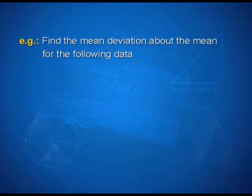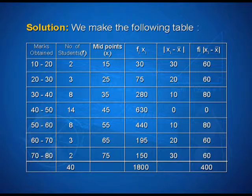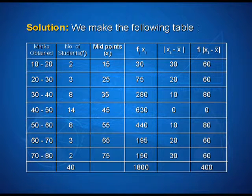Find out the mean deviation about the mean for the following data. Marks obtained and number of students are the two columns. Marks range from 10 to 20, 20 to 30, 30 to 40, 40 to 50, 50 to 60, 60 to 70, and 70 to 80. Number of students correspondingly are 2, 3, 8, 14, 8, 3, and 2. We make a table with columns: marks obtained, number of students (fi), midpoints (xi), product of fi and xi, absolute value of |xi − x̄|, and product of fi and |xi − x̄|.